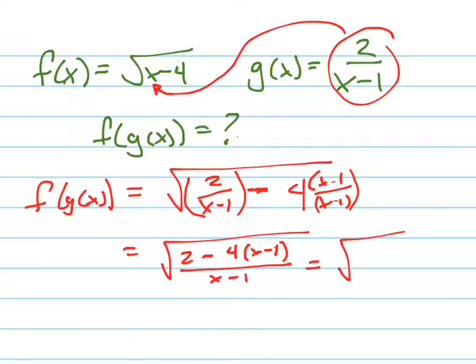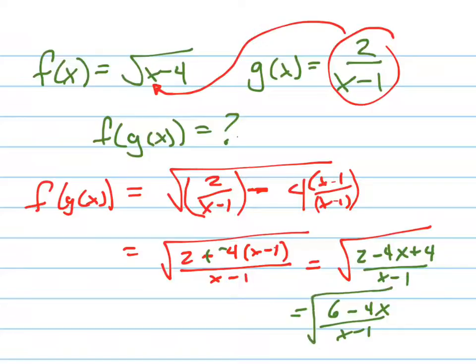Which equals, distribute, let me change colors here, distribute the negative into this. So it becomes 2 minus 4x plus 4 all over x minus 1. So that's 6, 2 plus 4 is 6, minus 4x. 6 minus 4x all over x minus 1, and that's your answer.